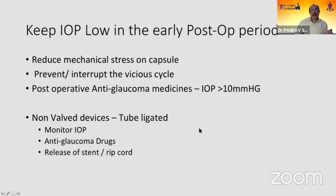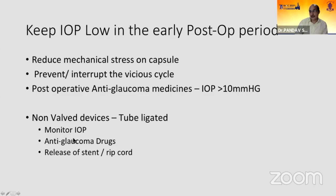Another key finding from these experiments: keeping IOP low in the early postoperative period reduces mechanical stress on the capsule and interrupts the vicious cycle. Postoperative anti-glaucoma medication should be considered after any glaucoma surgery, especially when IOP starts building up after implants. For non-valved devices the tube is ligated, so IOP control is initially good, but once aqueous flows through, fibrous tissue gets reactivated and the capsule thickens. It is important to monitor IOP and use anti-glaucoma drugs to keep it on the lower side.